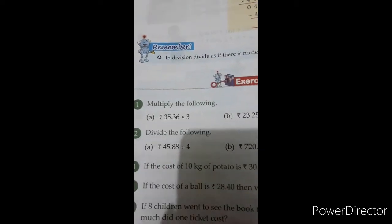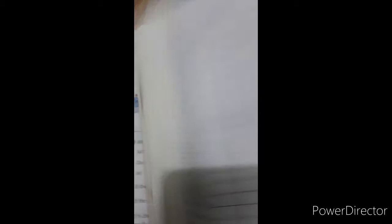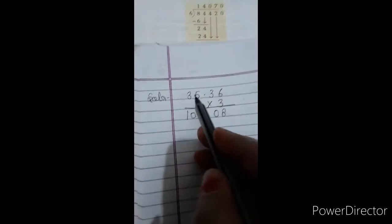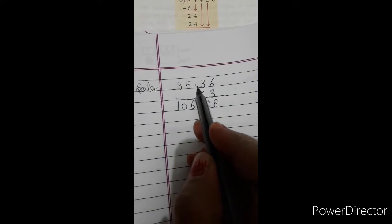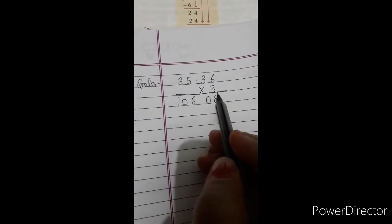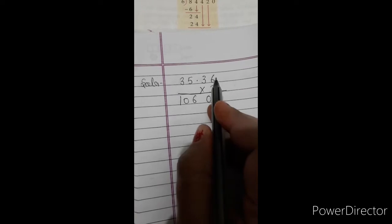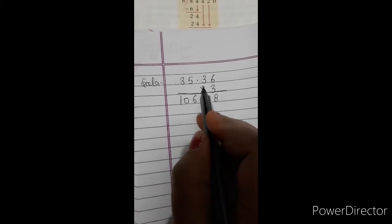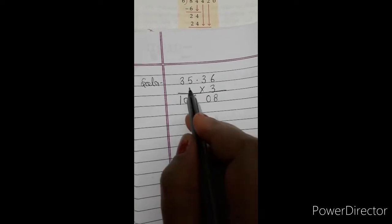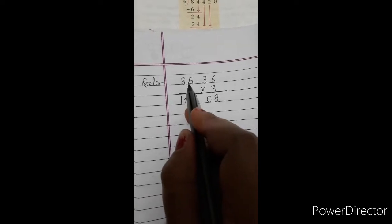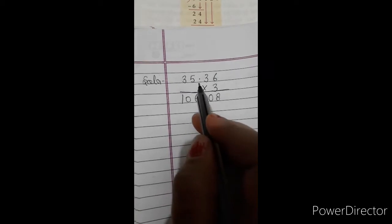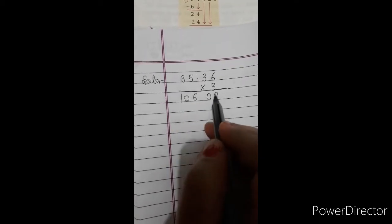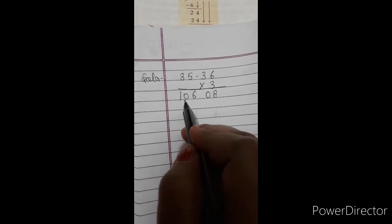So the solution is, solution number A, 35 and 36 multiply by 3. So 3, 6, 18, carry 1, 3, 3, 9, or 1, 10, carry again 1, 3, 5, 15, carry add करने पर 16 मिलेगा, carry again 1, 3, 3, 9, and 1, 10.